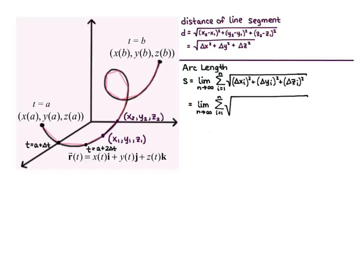So the arc length formula, I can rewrite it as the limit as n goes to infinity of the sum from i equals 1 to n of the square root of delta x sub i over delta t quantity squared plus delta y sub i over delta t quantity squared plus delta z sub i over delta t quantity squared. And then outside of the square root, I have times delta t. So it's the same equation. I just divided everything under the square root by delta t squared, and then put a delta t outside of the square root to compensate for that.